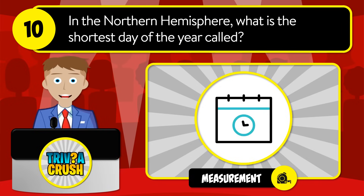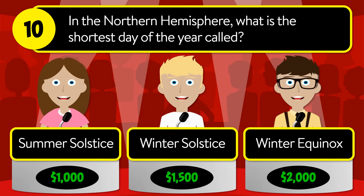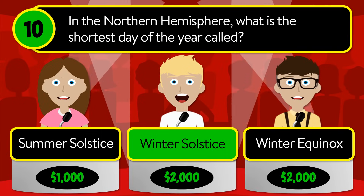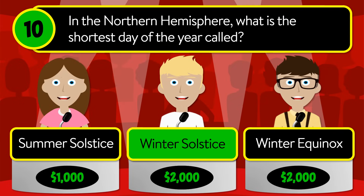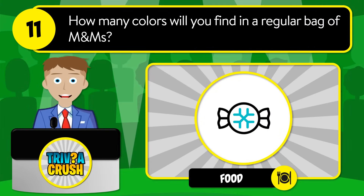Question number ten: in the northern hemisphere, what is the shortest day of the year called? Is it summer solstice, winter solstice, or winter equinox? The correct answer is winter solstice.